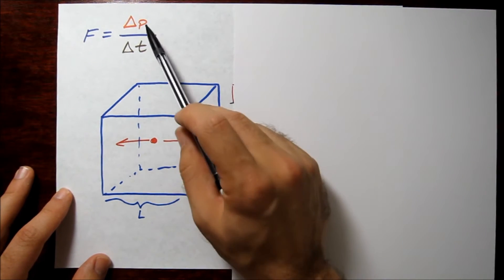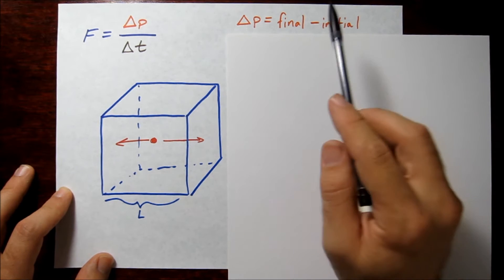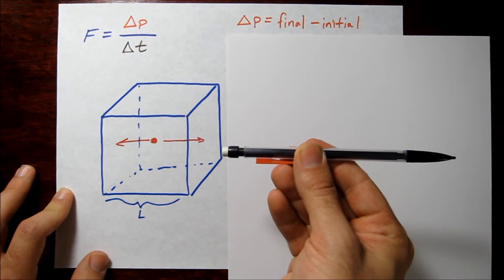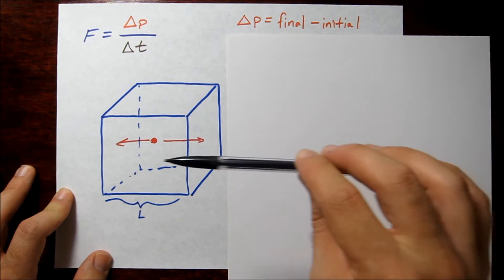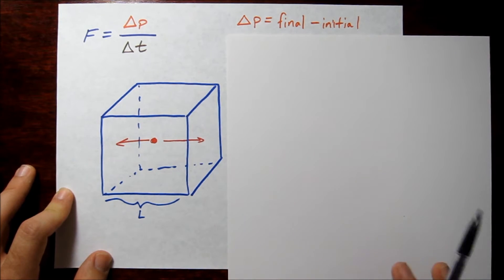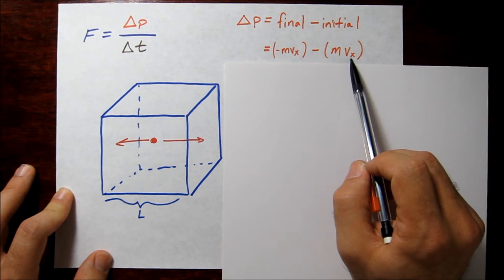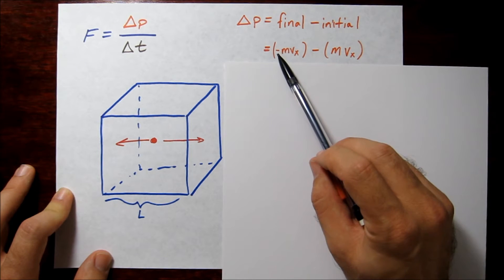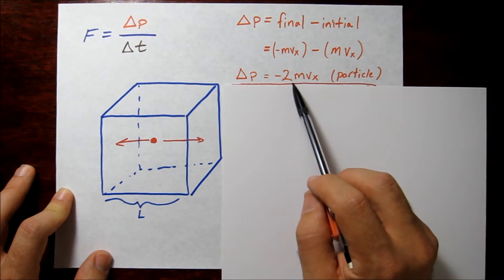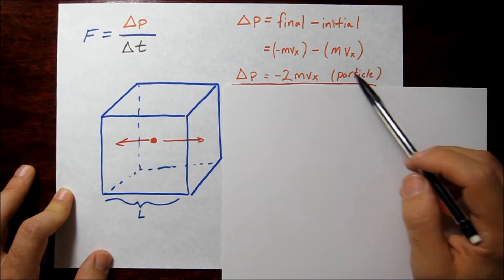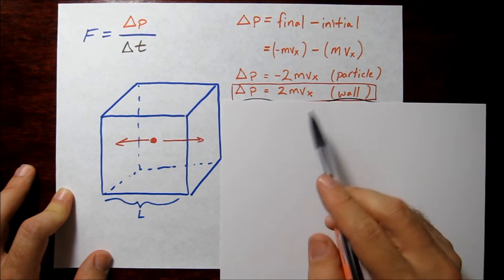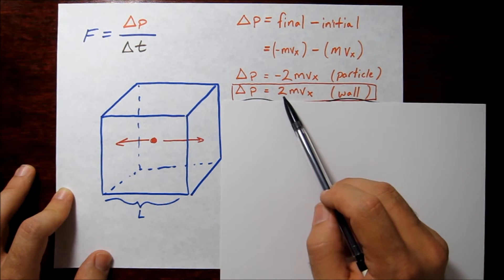Starting with the change in momentum: it's simply the final momentum minus the initial momentum. The initial momentum is m times v_x. When the particle hits the wall it returns in a perfectly elastic collision — no energy is lost — so it returns with the same speed but in the opposite direction. The final momentum is therefore negative m times v_x. Simplifying, the change in momentum with respect to the particle is negative 2mv_x. By Newton's third law, the change in momentum with respect to the wall is simply 2mv_x.